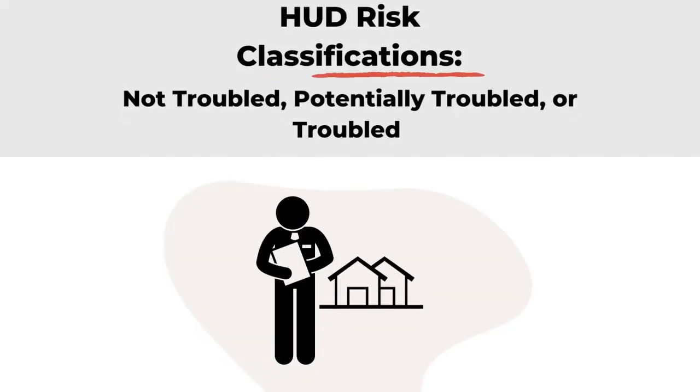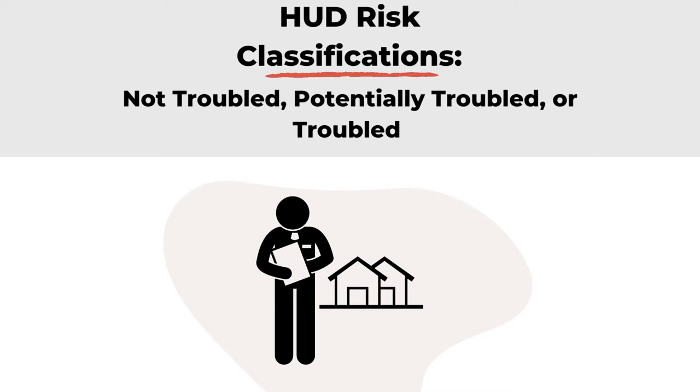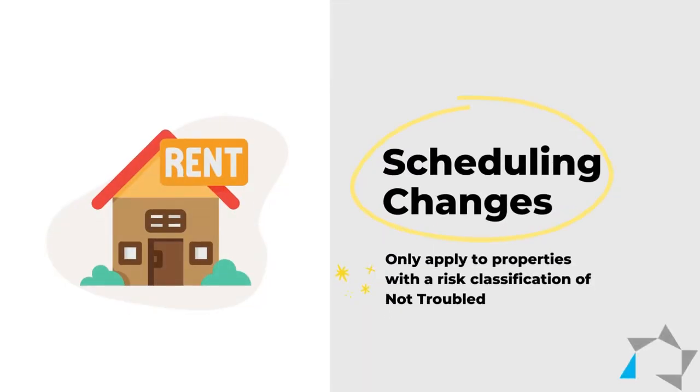The HUD risk classifications to be assigned are: not troubled, potentially troubled, or troubled. Section 8 properties with a risk classification of potentially troubled will continue to participate and have annual management and occupancy reviews. The scheduling changes only apply to properties with a risk classification of not troubled.